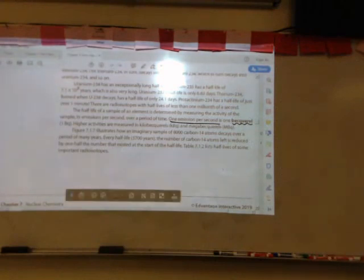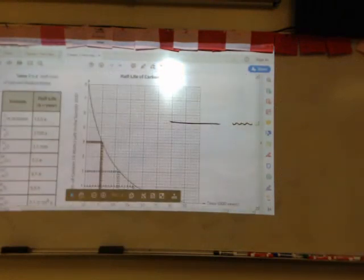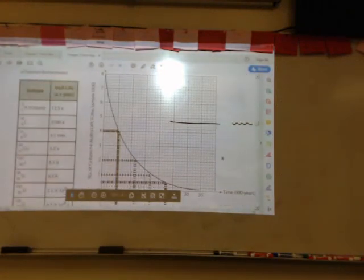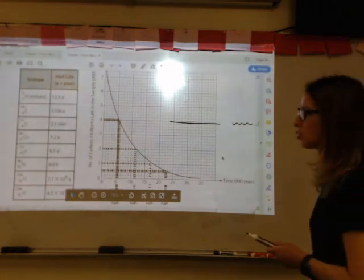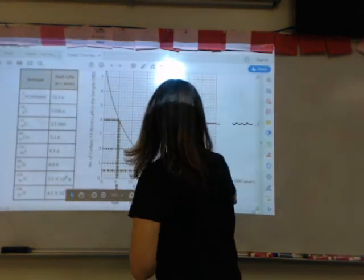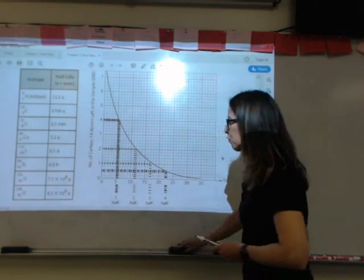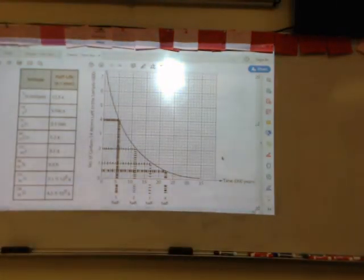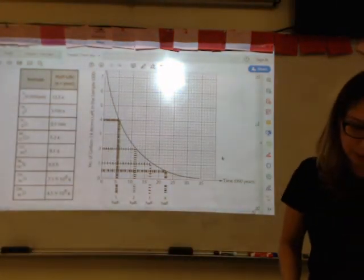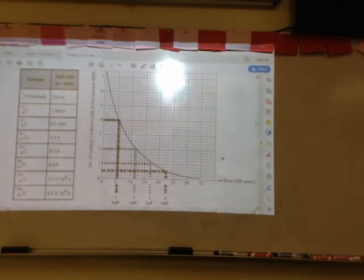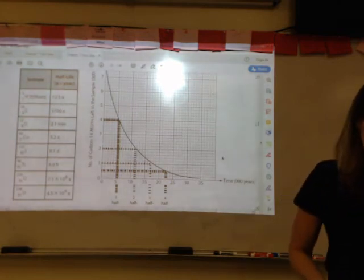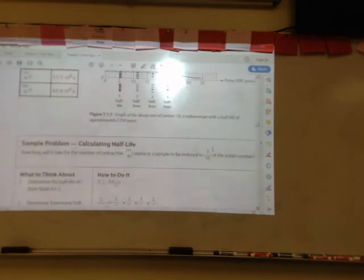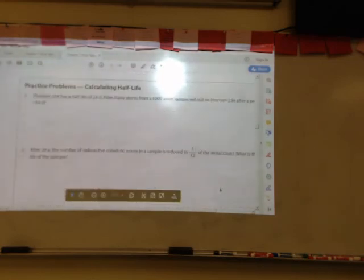If you take a look at the next page, they give you a table of half-lives of some common substances, tritium, carbon-14, oxygen-15, cobalt-60, and a few other substances. What we want to do is let's take a look at a practice problem on the next page here.